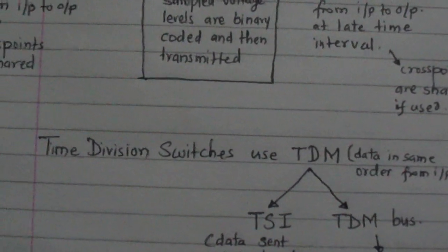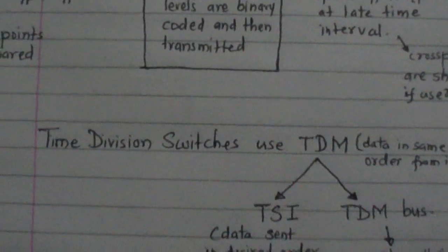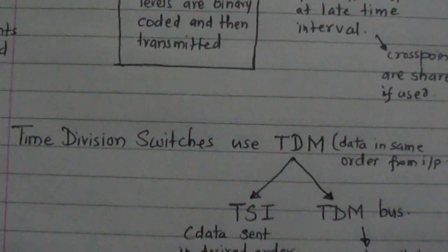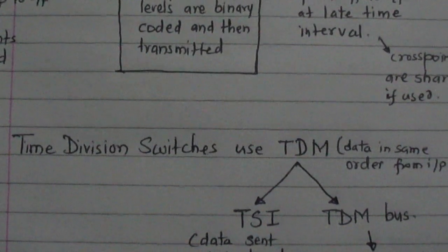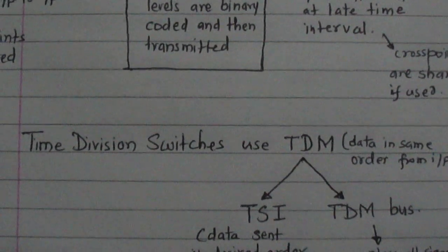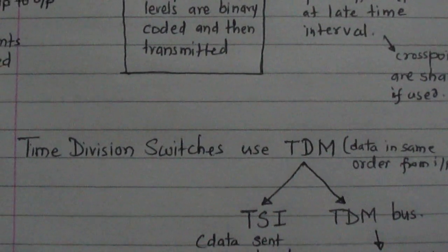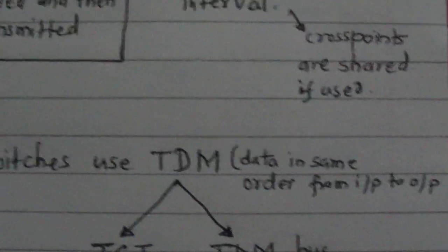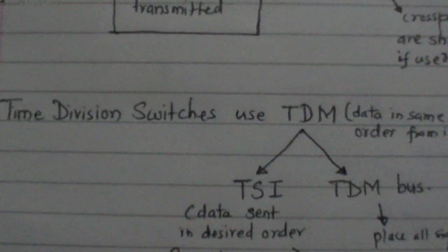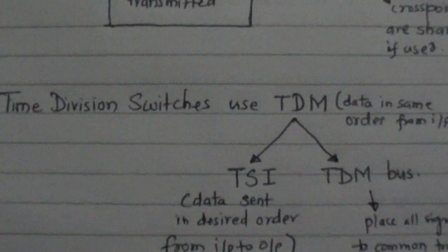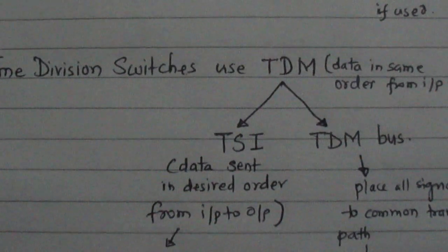Time division switches use time division multiplexing. Multiplexing means transmitting one or more signals over the same channel. There are two types: frequency division multiplexing, where the total band of frequency is divided, and time division multiplexing, where time is divided. In ordinary TDM, data is sent in the same order from input to output, but time division switches using TDM are of two types: TSI and TDM bus.